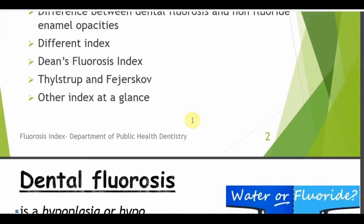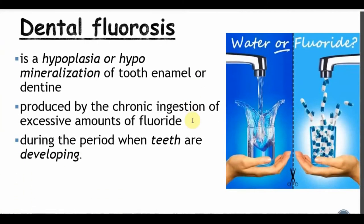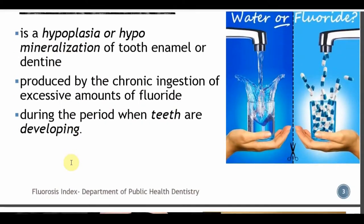We have already studied what fluorosis is — it is nothing but hypoplasia or hypomineralization of tooth enamel or dentine, produced by chronic ingestion of excess amount of fluoride, that is more than 1–2 ppm. Teeth are affected only when the mineralization of teeth is happening during development.